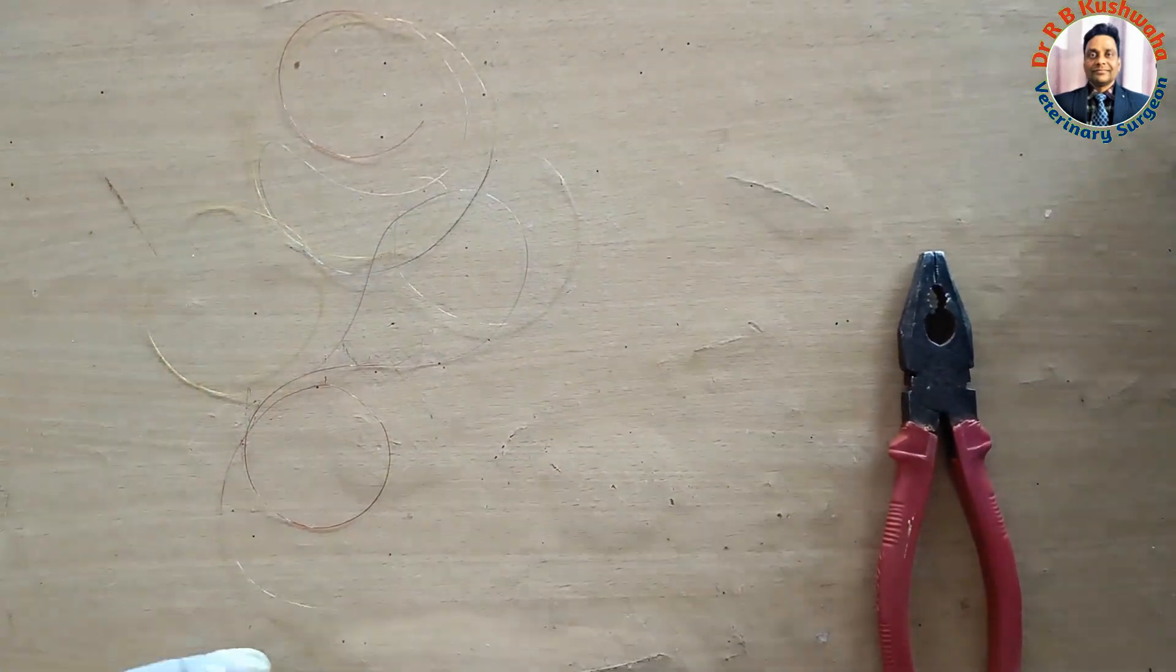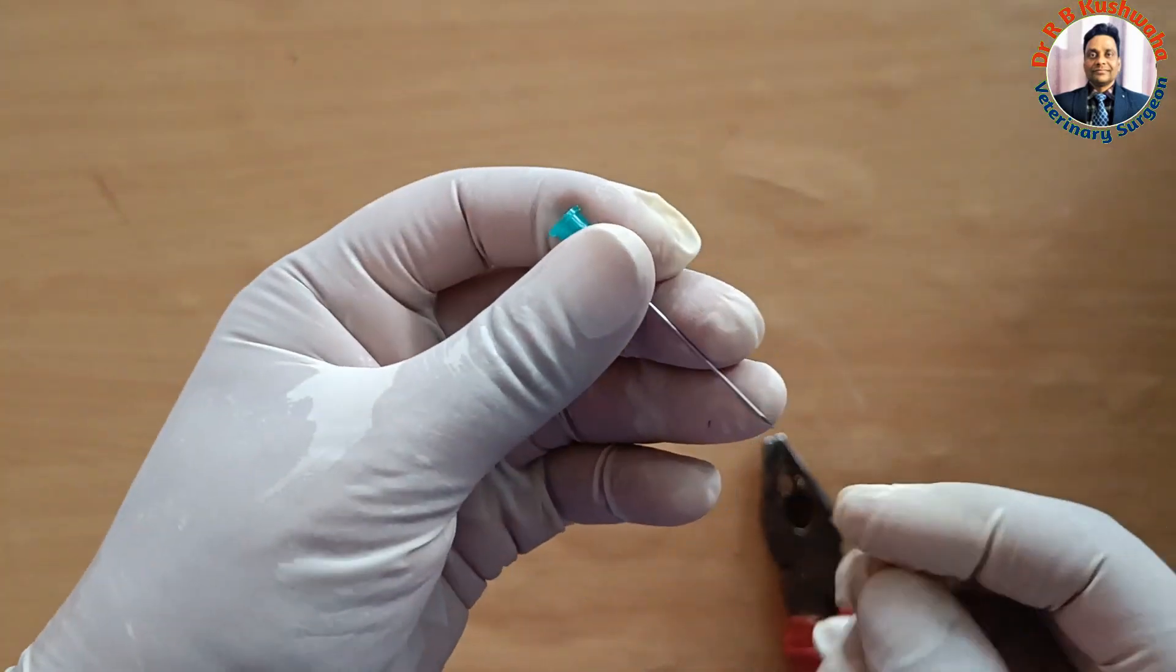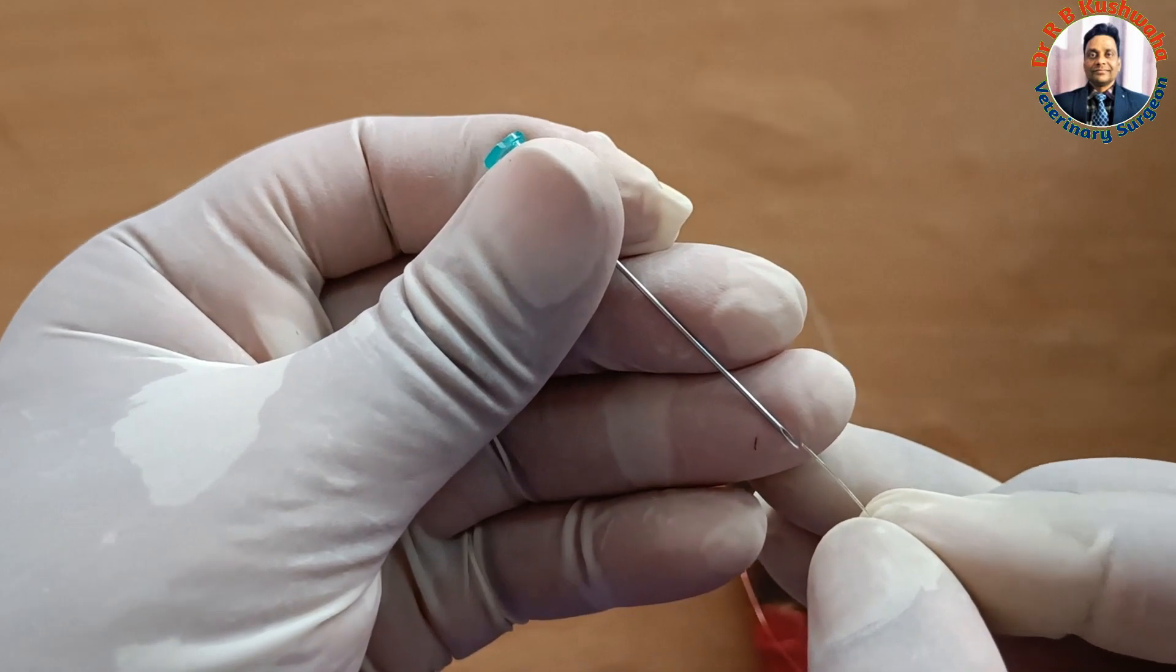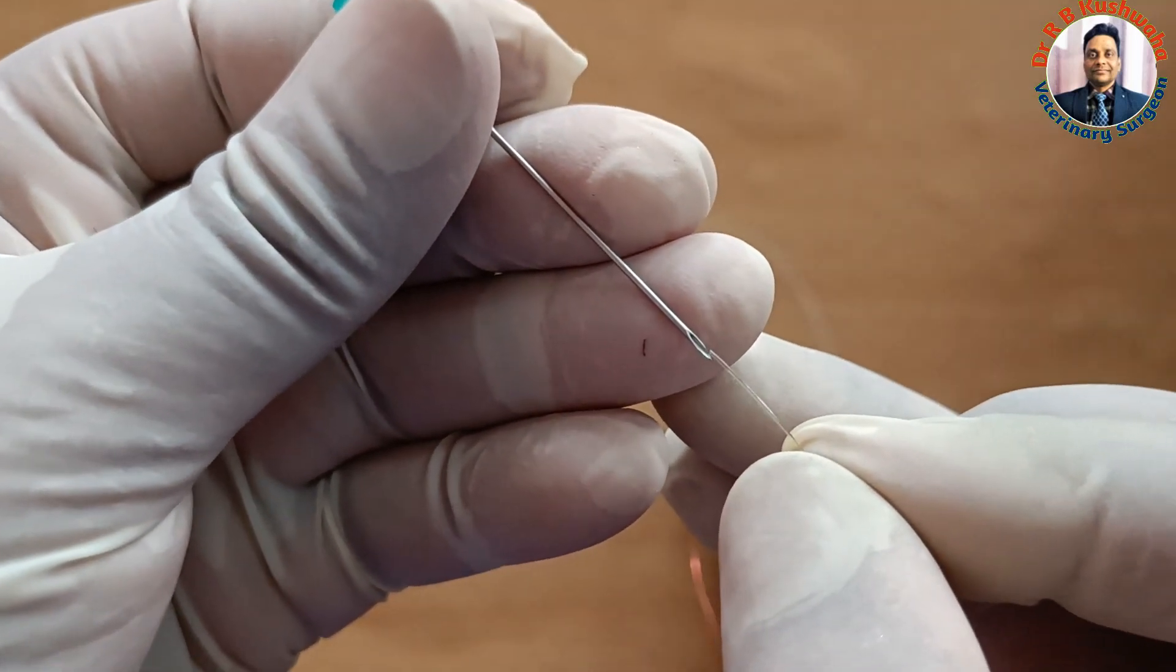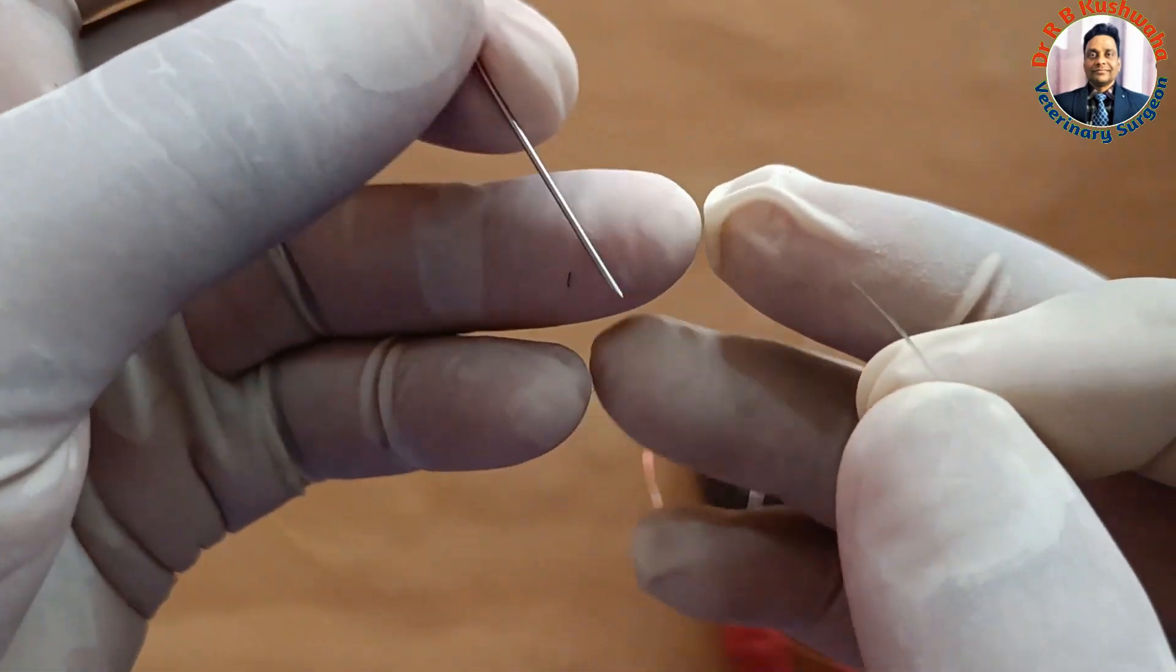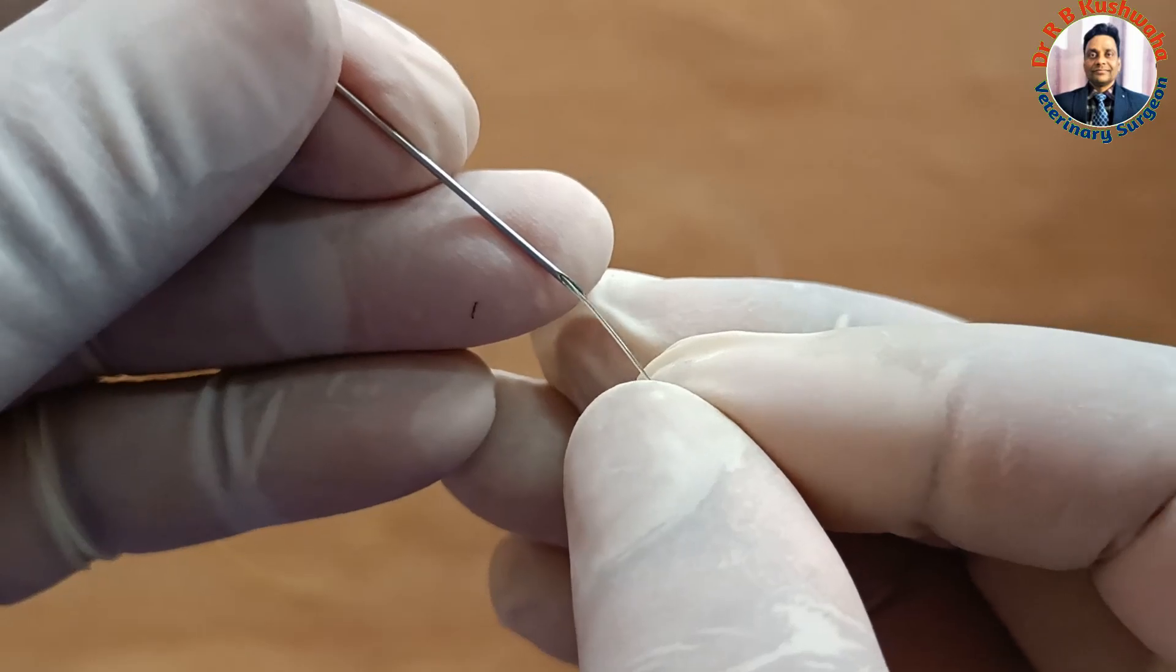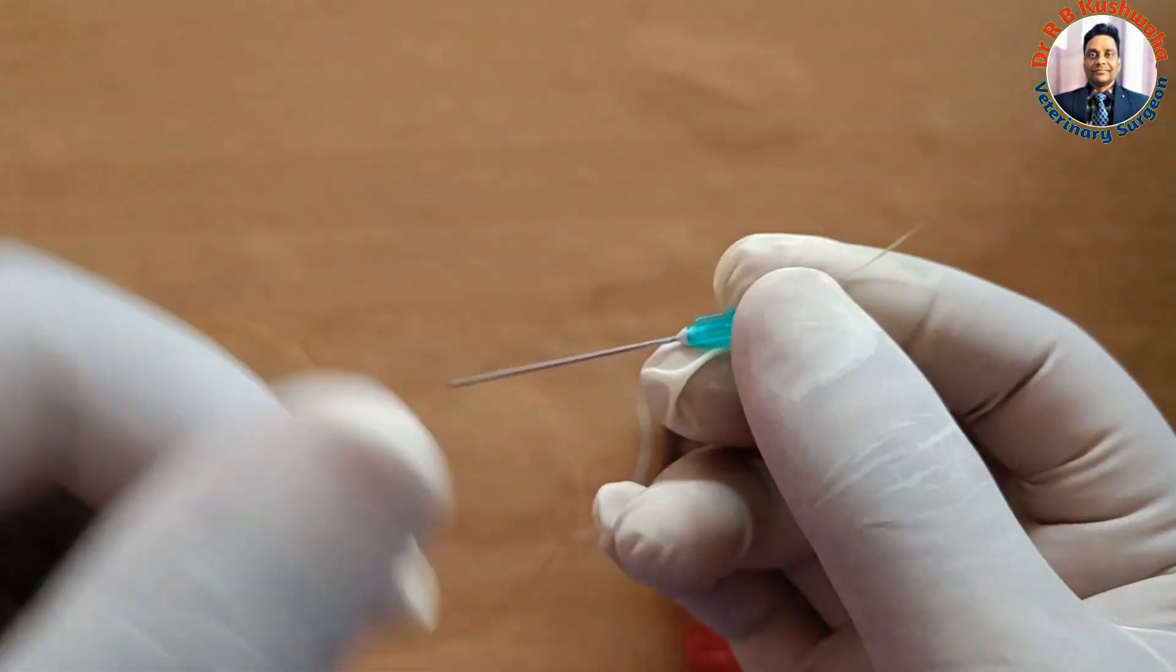Now I demonstrate first using this 21 gauge hypodermic needle. This is normally available with the drip set. You could see, this is the bevel of the hypodermic needle, this is the shaft and this one is the hub. Normally we insert the thread from the bevel side, insert and then you take out from the hub.